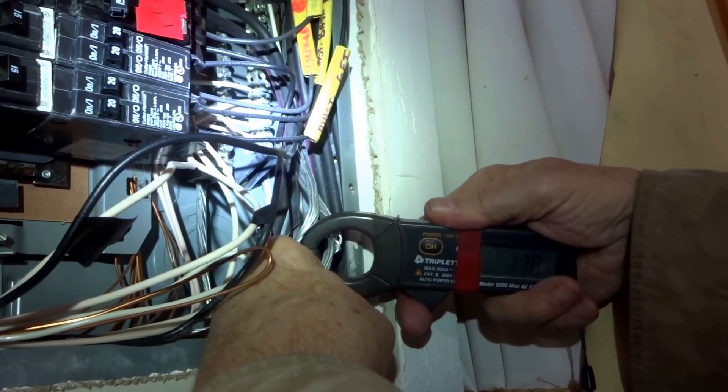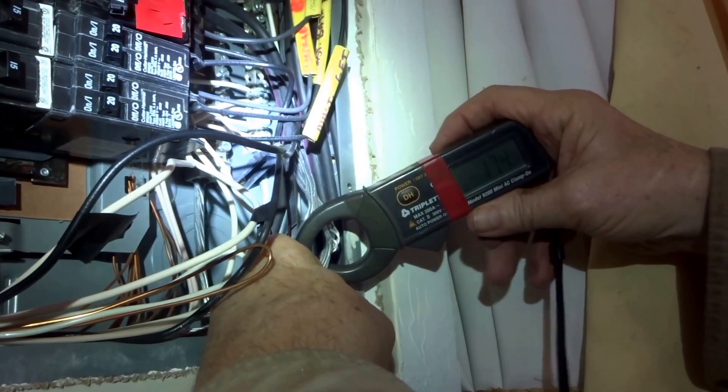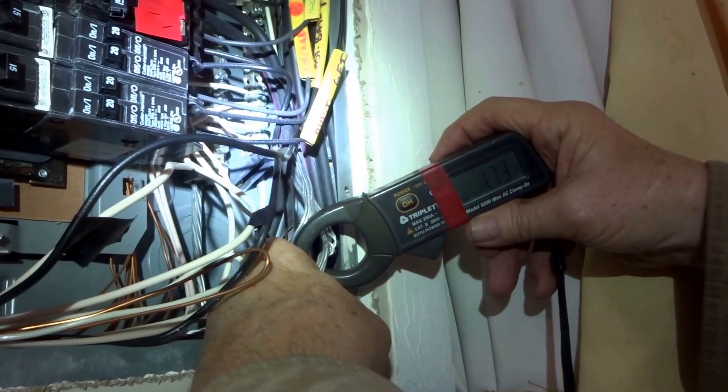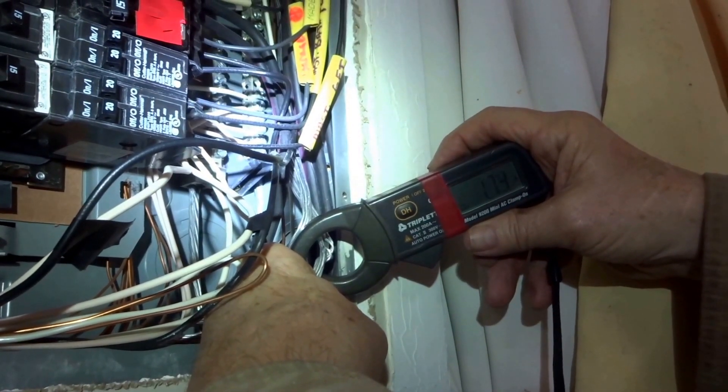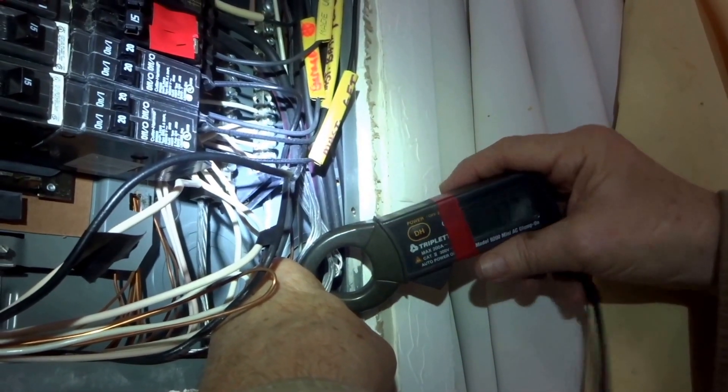That's correct. Okay, anything else you want to mention about this? No, we need to have the utility trouble crew come out and clean up the service neutrals as a starting point, and then we recheck these levels, and they will probably go down.